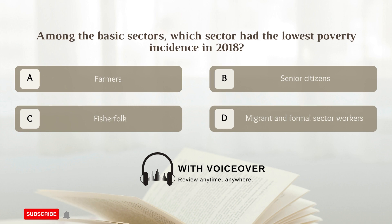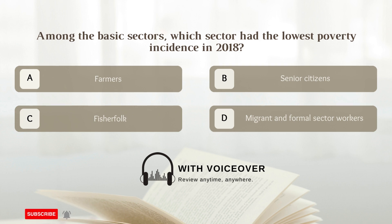Among the basic sectors, which sector had the lowest poverty incidence in 2018? A. Farmers; B. Senior Citizens; C. Fisherfolk; D. Migrant and formal sector workers. Answer D. Migrant and formal sector workers.